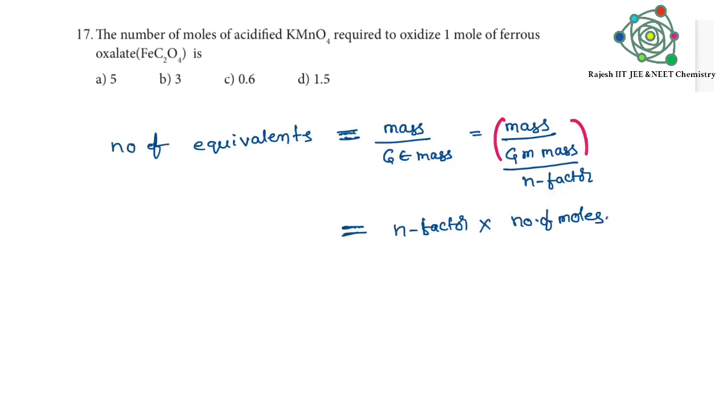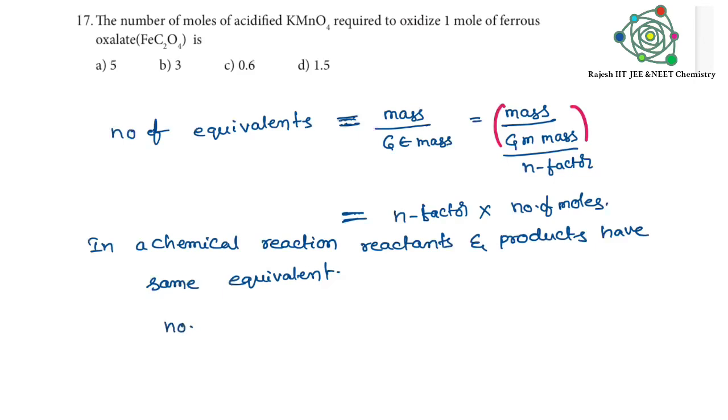According to the problem, here first we need to have an idea. That is, in any chemical reaction, reactants and products have same number of equivalents or same equivalents. So therefore according to this point we can take, number of equivalents of KMnO4 must be equal to number of equivalents of ferrous oxalate FeC2O4. So we can write like that.